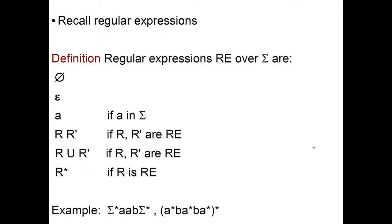Let us recall regular expressions, denoted RE over an alphabet sigma, as the empty set, the empty string, A where A is a symbol in sigma. Then you can have concatenation, union, and star. These were examples — we spent a lot of time on this, this is just a quick recall.